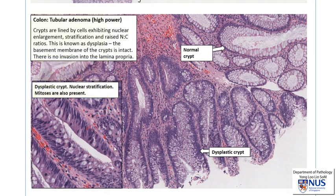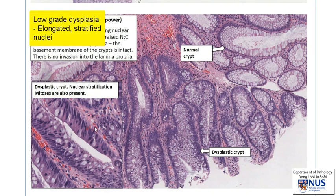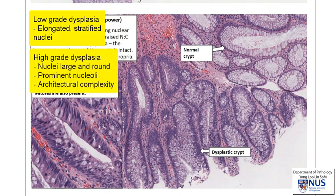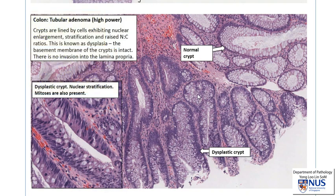We can grade dysplasia into low-grade and high-grade. Usually the appearance of elongated nuclei with some degree of nuclear stratification is seen in low-grade dysplasia, whereas in high-grade dysplasia the nuclei are rounder, they have more prominent nucleoli, and there may be more architectural abnormality in the sense that the crypts appear even more irregular and more crowded. In patients with high-grade dysplasia, the adenomatous polyps should be completely excised because there is a higher risk of progression to carcinoma if not removed.